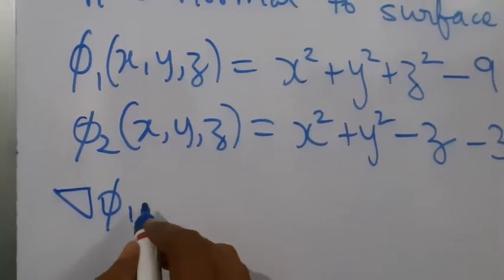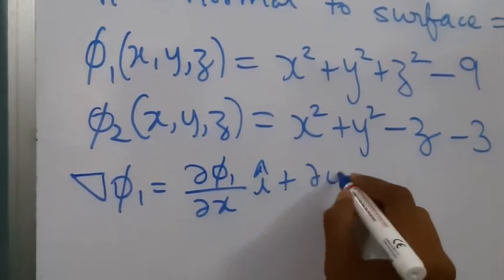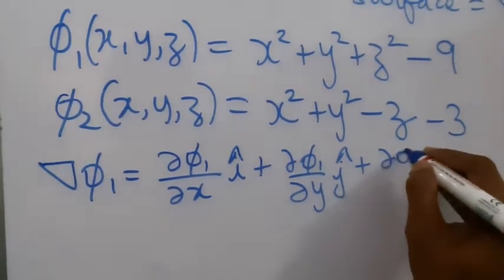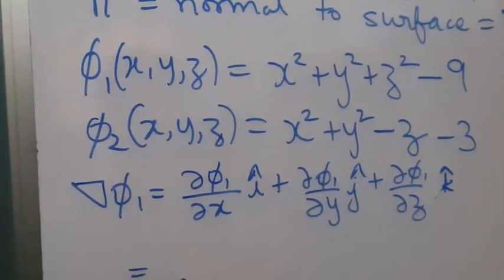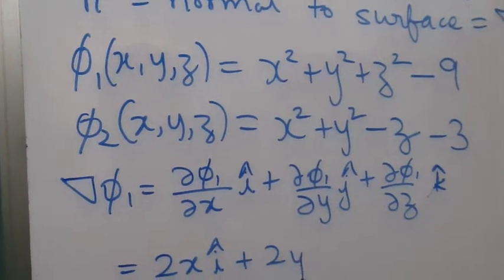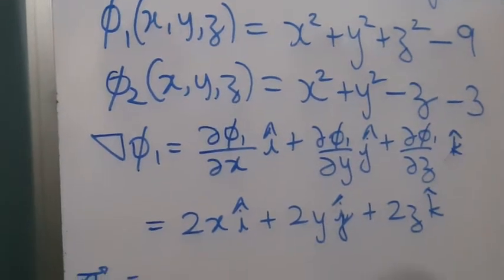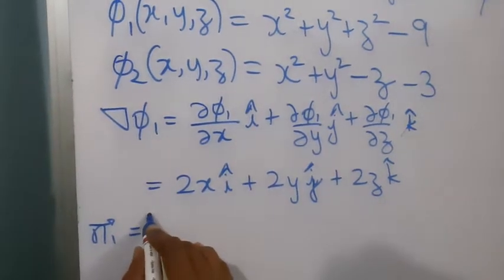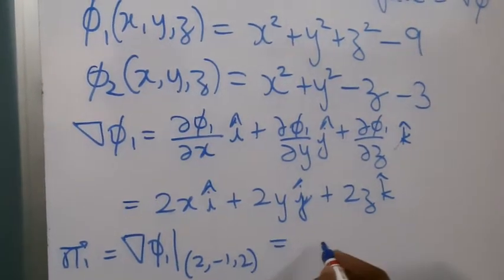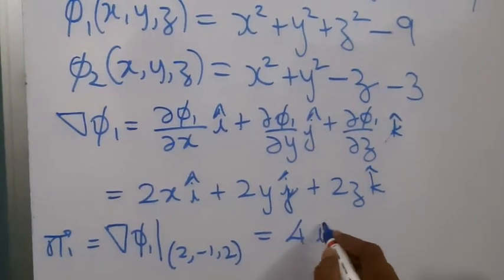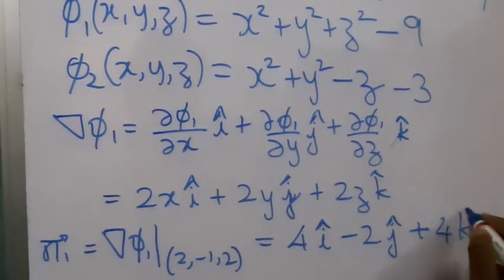Gradient φ1 = ∂φ1/∂x î + ∂φ1/∂y ĵ + ∂φ1/∂z k̂ = 2x î + 2y ĵ + 2z k̂. So vector n1 = grad φ1 at (2, −1, 2), which gives 4î − 2ĵ + 4k̂.